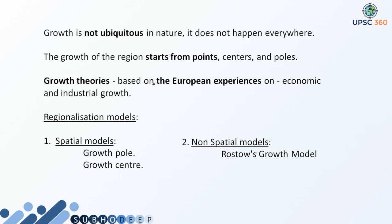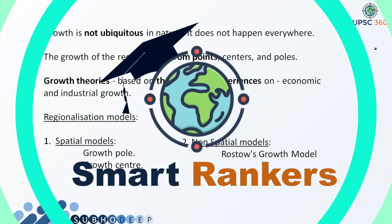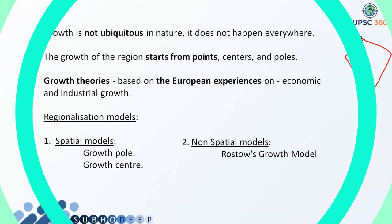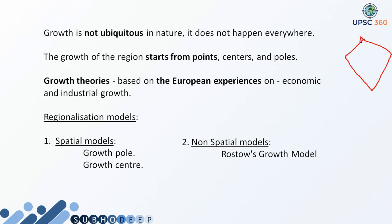If we see growth, then actually growth is not at all ubiquitous throughout the world. Take for example any country — take the example of India only. From north to south, from east to west, the growth everywhere is not the same, we know about it.